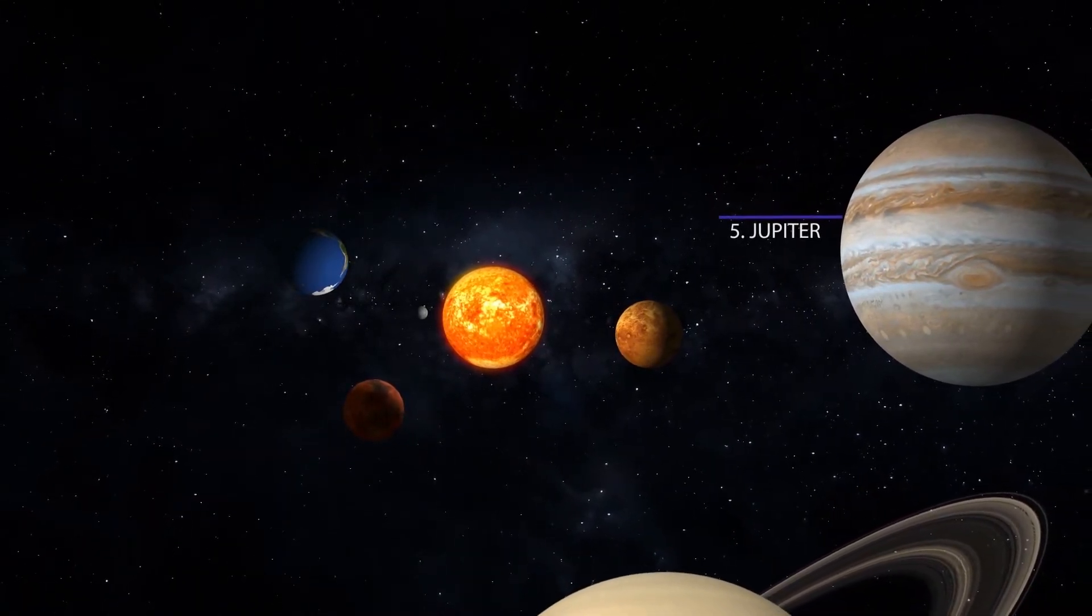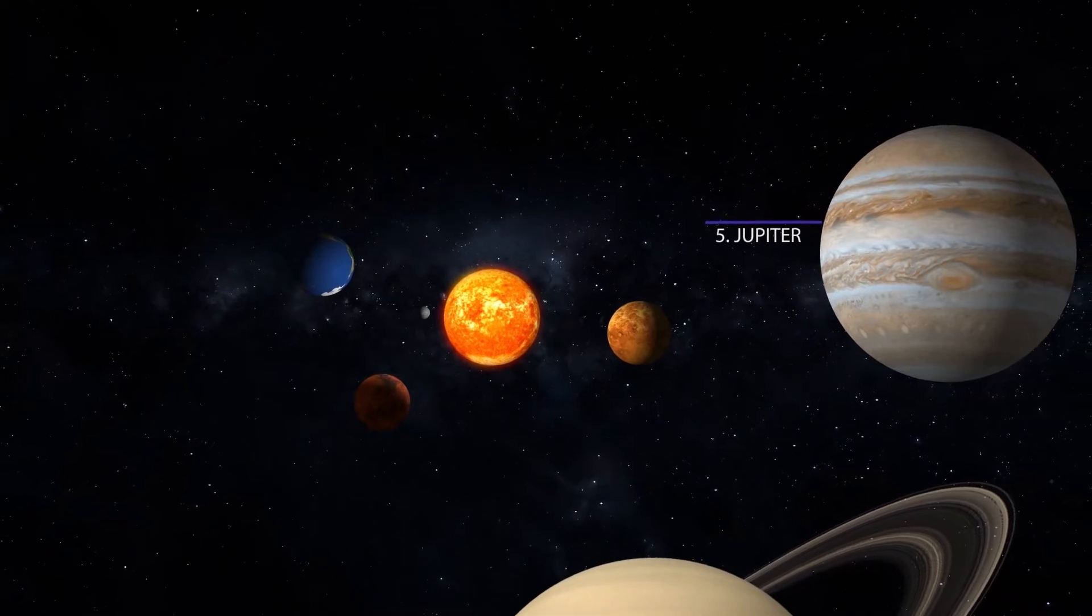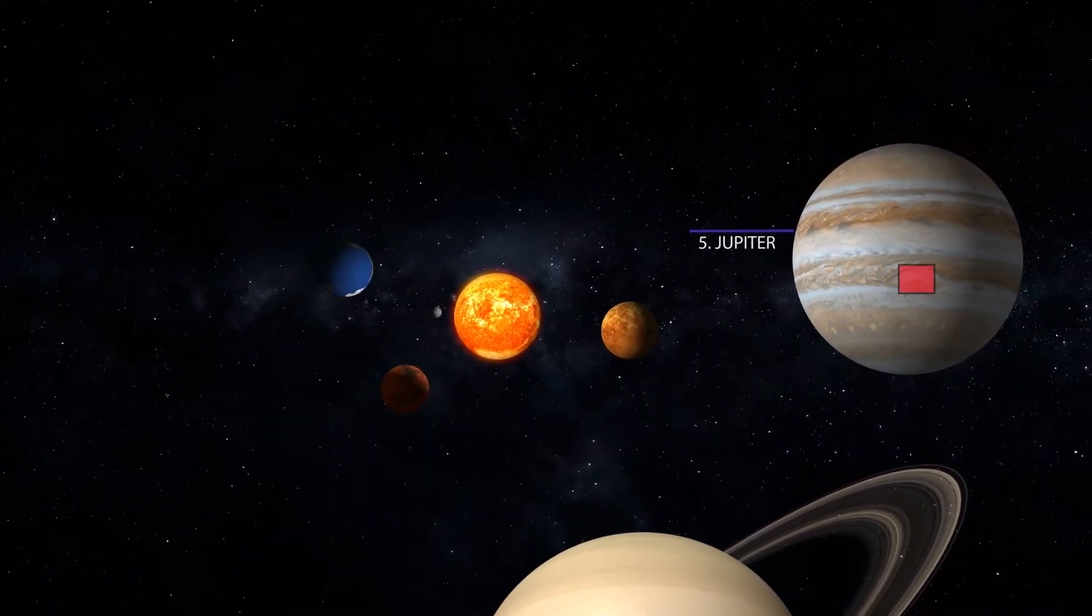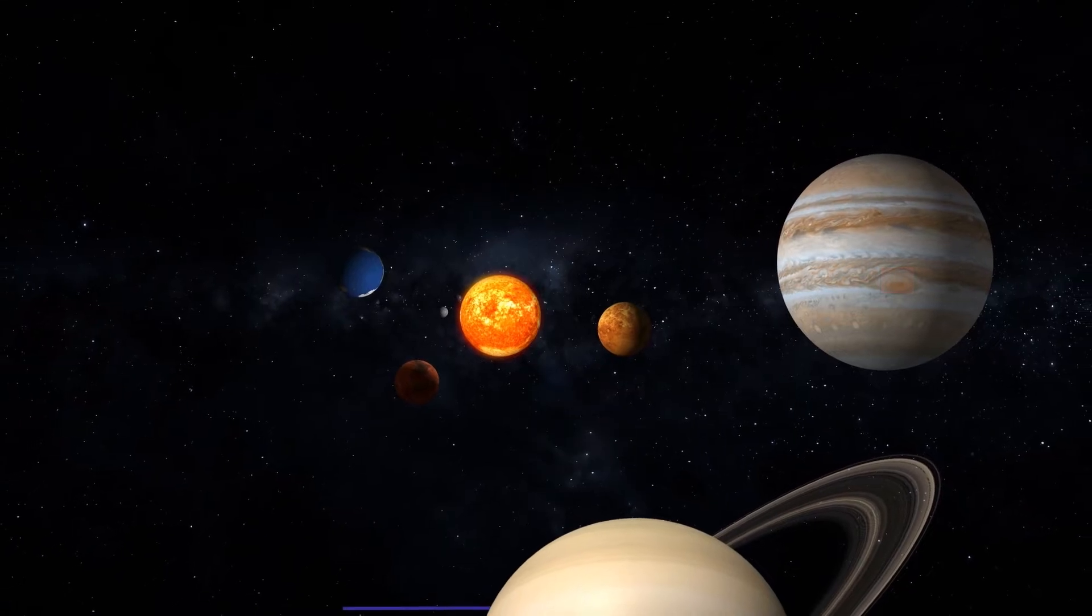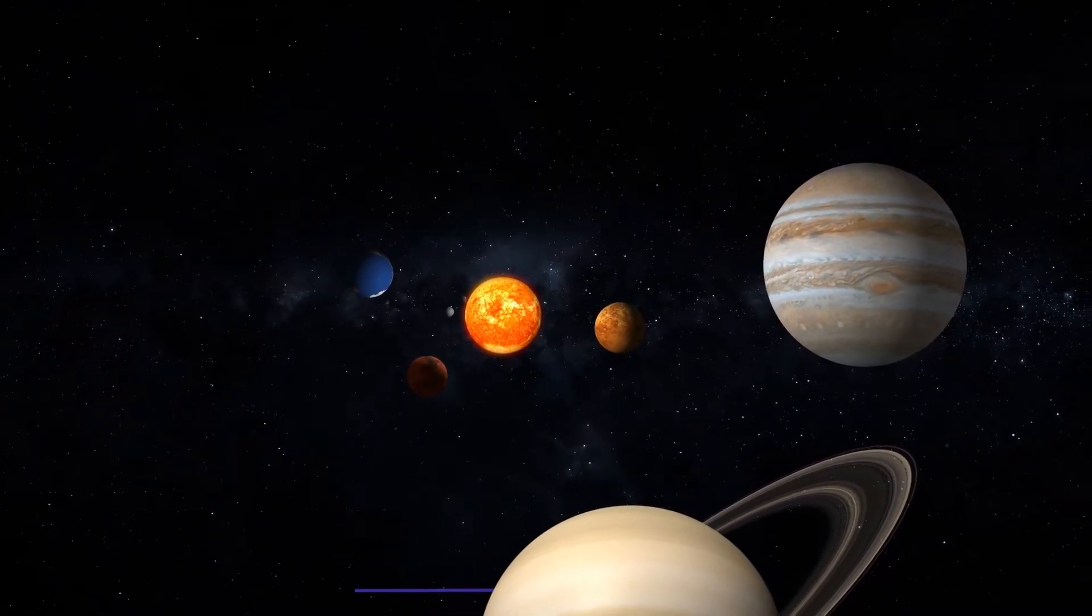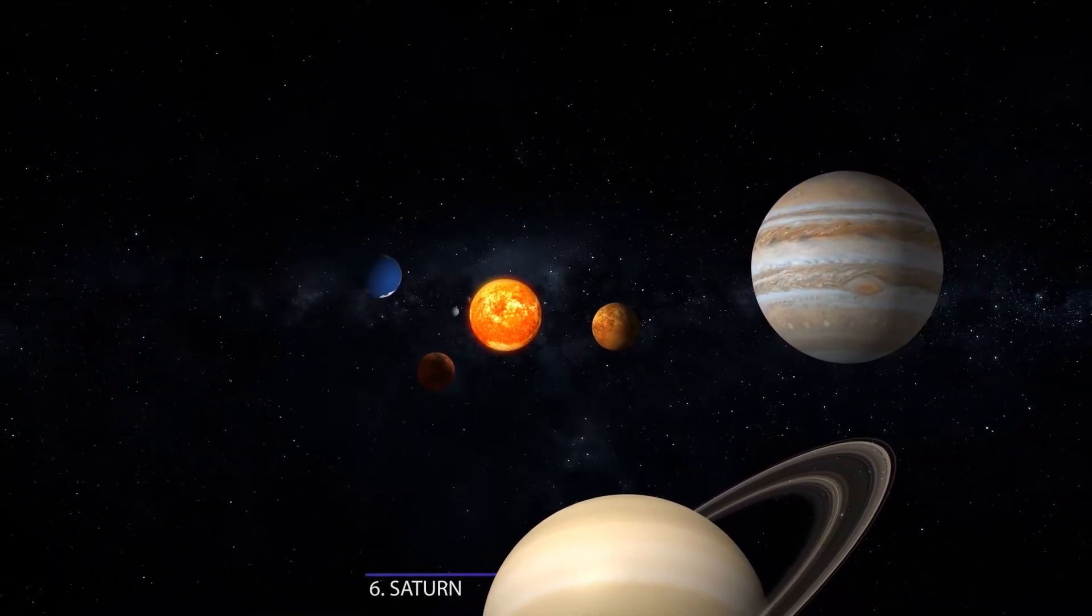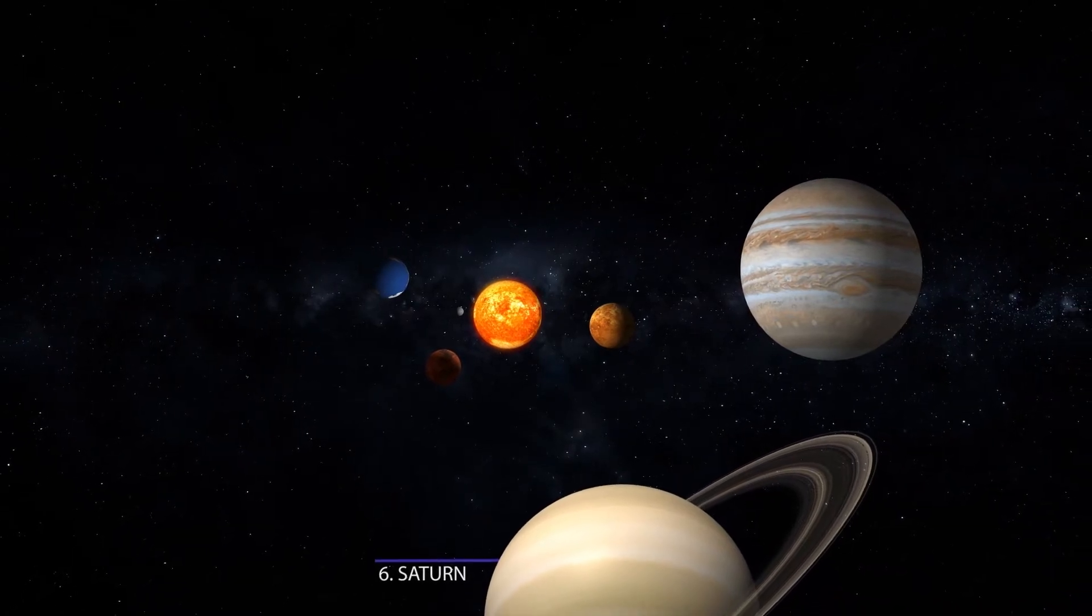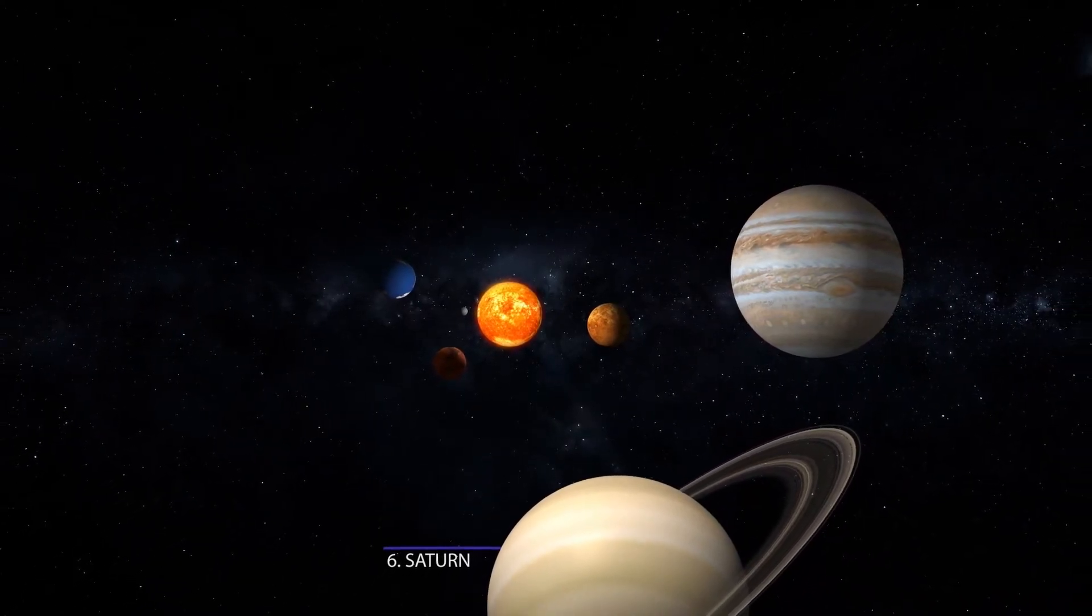The next planet, Jupiter, is the largest among our planetary system. That red spot in Jupiter itself is larger than the Earth. For comparison, if Earth were the size of a grape, Jupiter would be the size of a basketball. It's a giant planet.